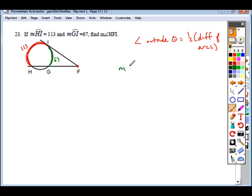we can use this relationship that angle HFI is equal to one half the difference of the intercepted arcs. So 113 minus 67, and so we can just solve for that.